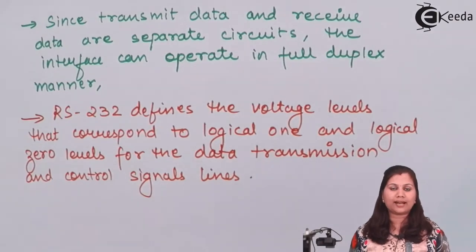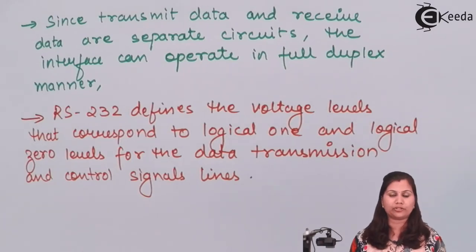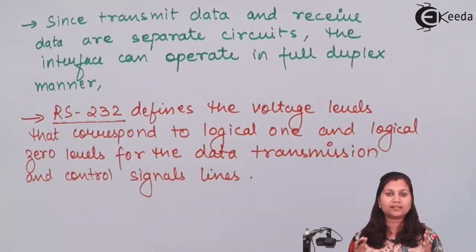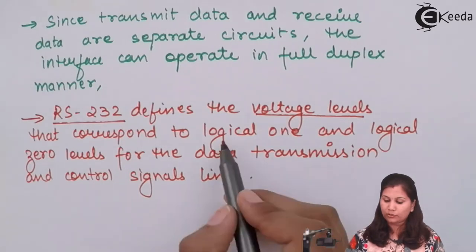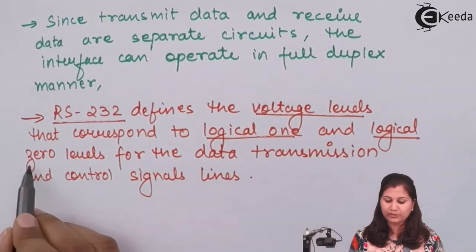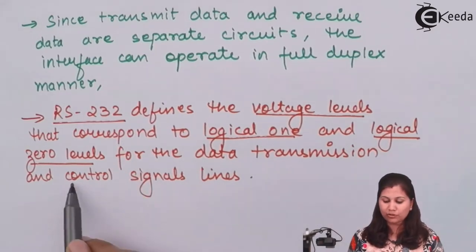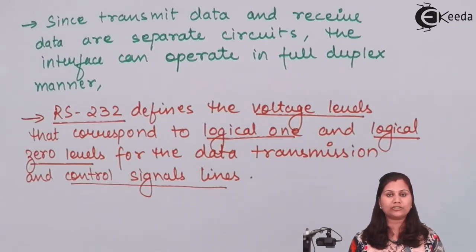RS-232 transmits and receives serial data in the form of voltage levels. These voltage levels represent either logic 0 or logic 1. Both data signals and control signals are transmitted in the form of these voltage levels.